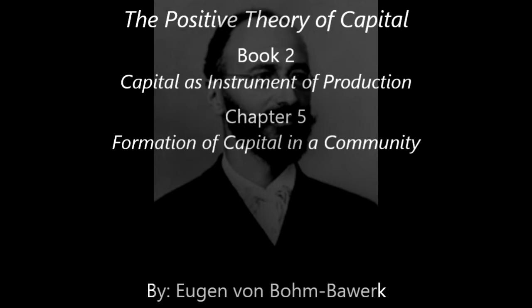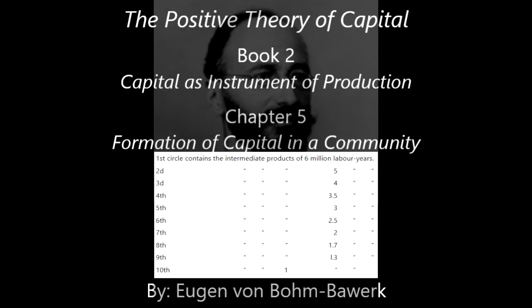On these lines, we may now put our illustration into figures. To facilitate our survey, we shall assume that the total capital of the community is comprised in ten yearly circles. If thirty million labour years are embodied in this total capital — for simplicity's sake I again leave out the invested uses of land — we may assume the following division of circles. The first circle contains the intermediate products of six million labour years. In the normal course of things, the outermost circle becomes divided off from capital each year and is exchanged into consumption goods, but the succeeding circles press forward. Each circle, by the addition of new labour, advances one stage, both as regards nearness to maturity and amount of capital invested. The first class, therefore, is changed into consumption goods, the second class into the first, the third into the second, and so on.